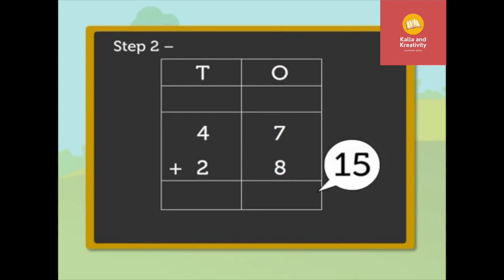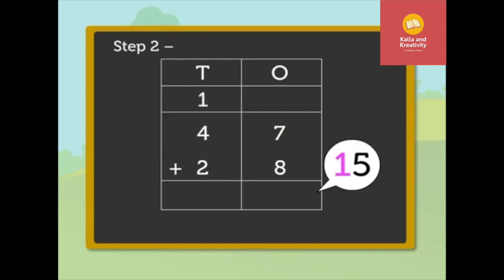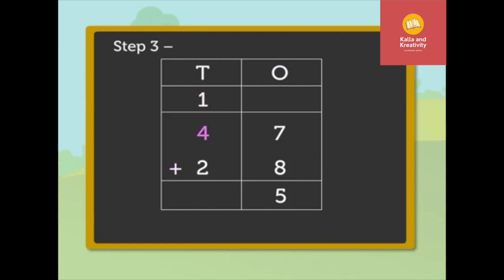Regroup the fifteen ones, that is, fifteen ones is equal to one-ten plus five ones. Carry the one-ten to the tens column and write five in the ones column. Step 3: Add the tens, that is, one plus four plus two is equal to seven. Write seven under the tens column. So, we got the answer as seventy-five. Forty-seven plus twenty-eight is equal to seventy-five.